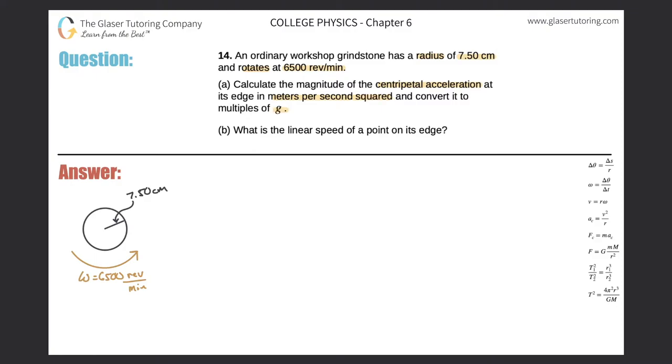All right. So first thing I'm going to do is start with the formula for centripetal acceleration. Now there's two over here on the right hand side. But I realize that they're giving me a radius and they're also giving me some angular velocity. So therefore I'm going to choose this equation to start with.